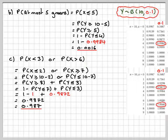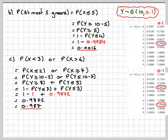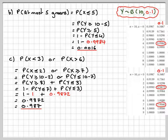This has been a video to show you how to find probabilities using the complementary random variable when we have a probability of success greater than 0.5. I hope you've understood, and thank you very much for watching.